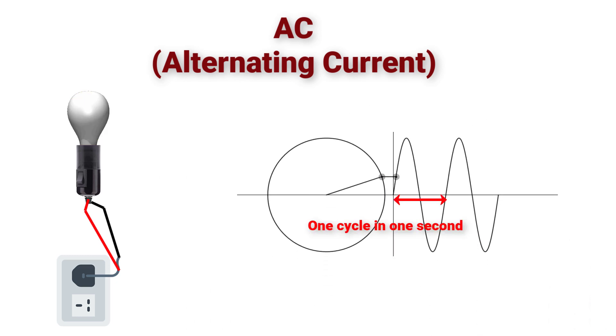But if we decrease the frequency to a certain level, we will start noticing what is happening with the lamp. For example, at frequency equal to 1 Hz, only one cycle with two peak points will occur.